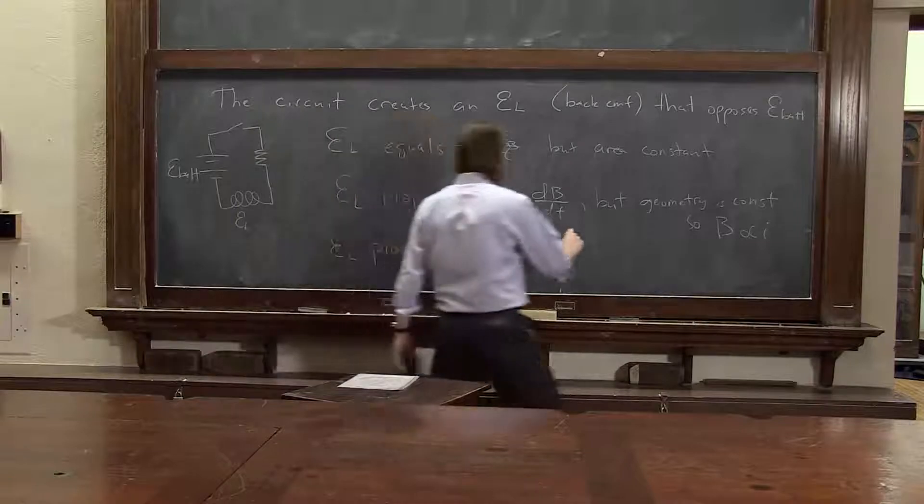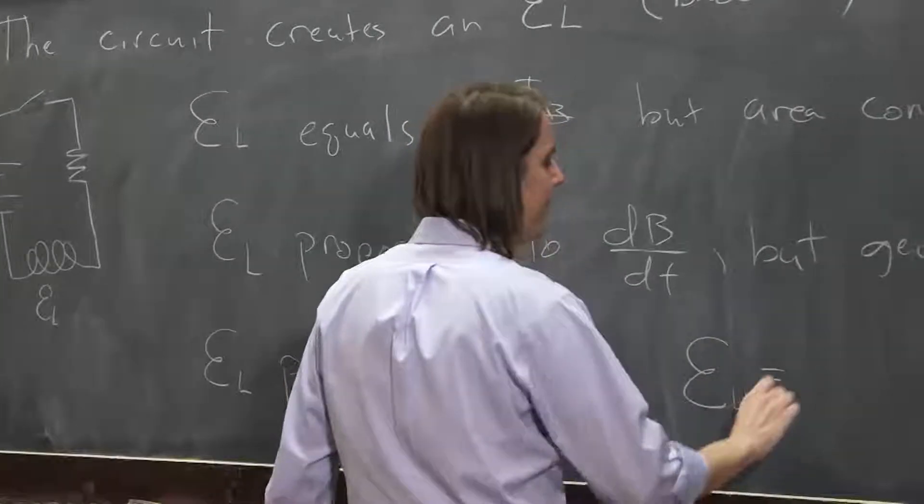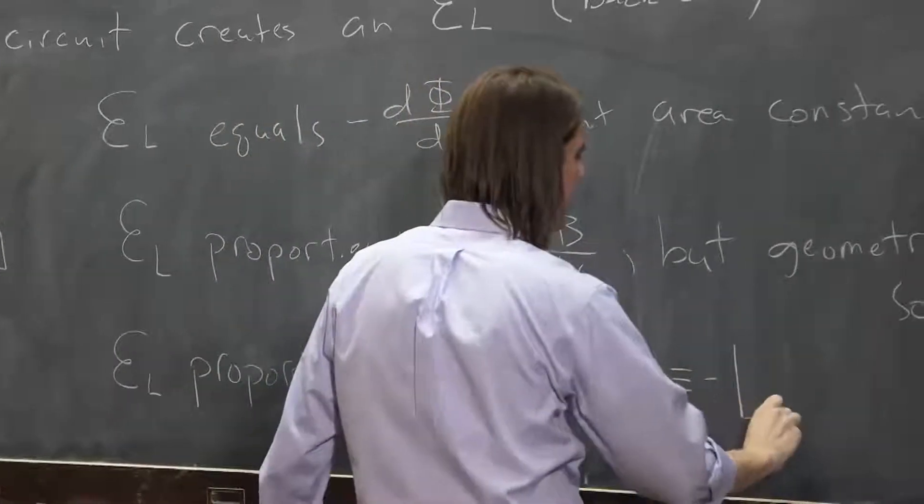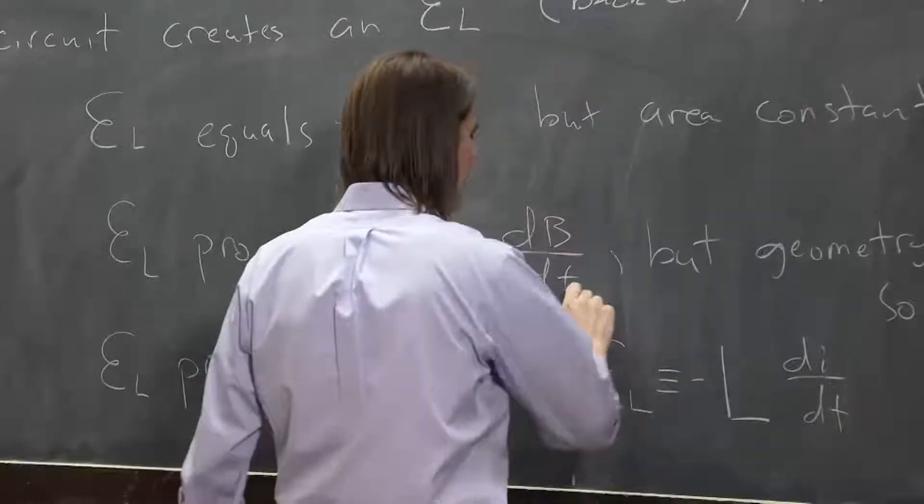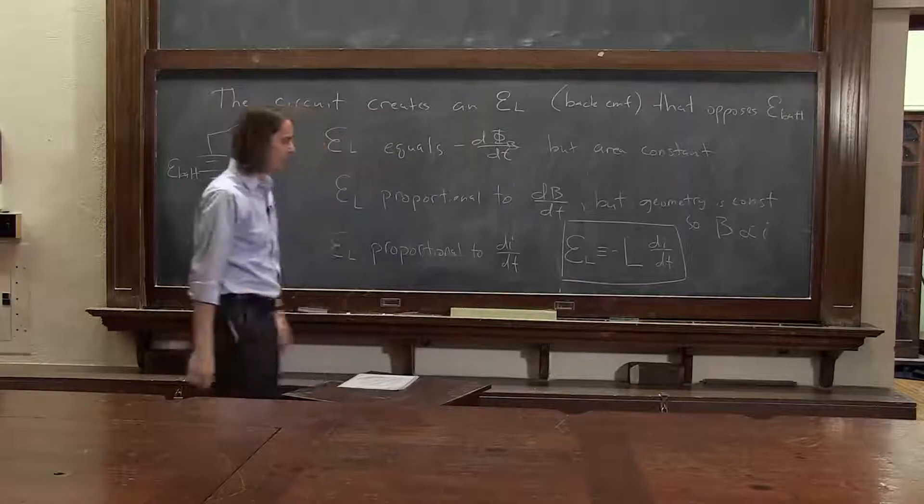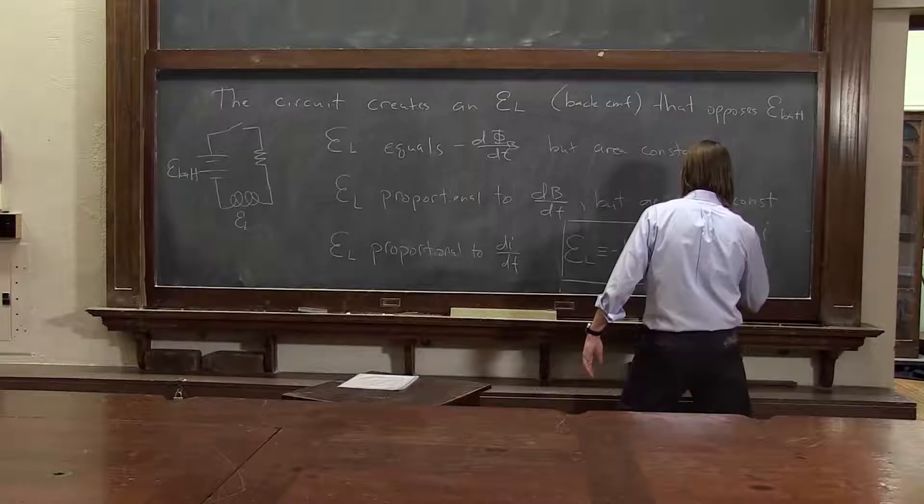So you don't deal with that. When you're doing circuits, you just say, here it is. EL is defined as minus, we'll put the minus sign back in because it's always minus, L, dI dt. L is simply the constant of proportionality. It's the inductance of the little coil.